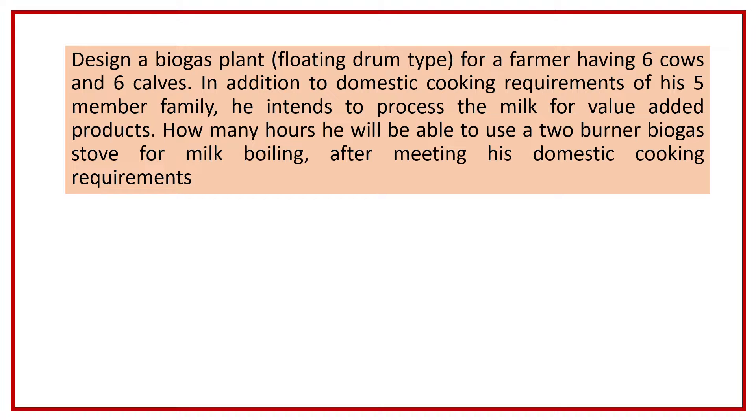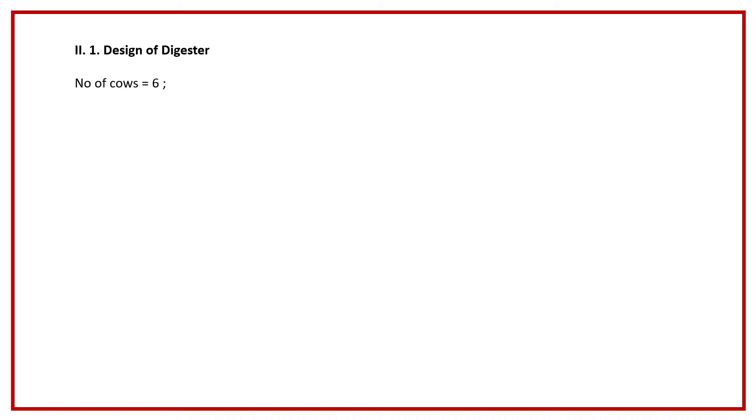Moving to the first part — the design of the digester — the farmer has six cows and six calves. The average value of cow dung from one matured cow is almost 10 kg per day. So from his six matured cows, he will get almost 60 kg of cow dung per day.